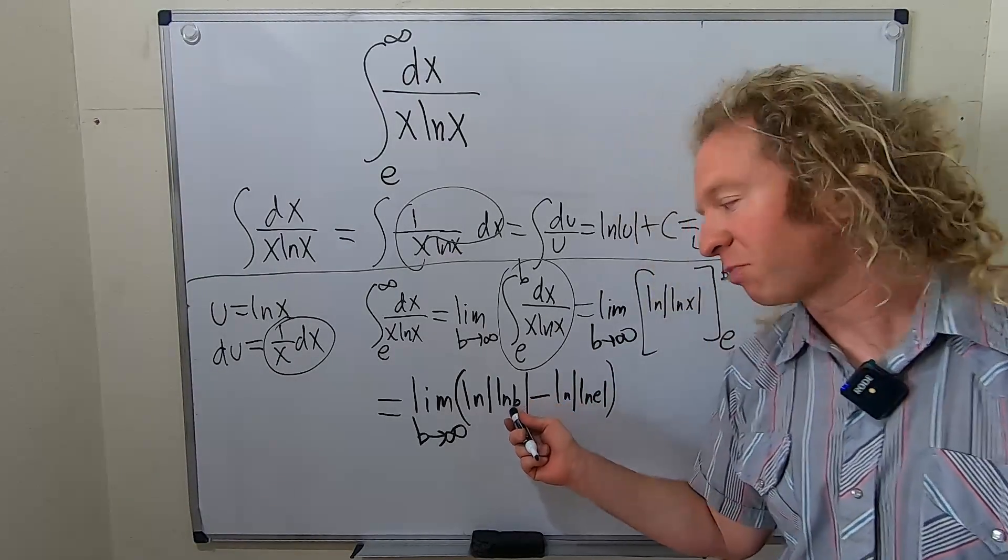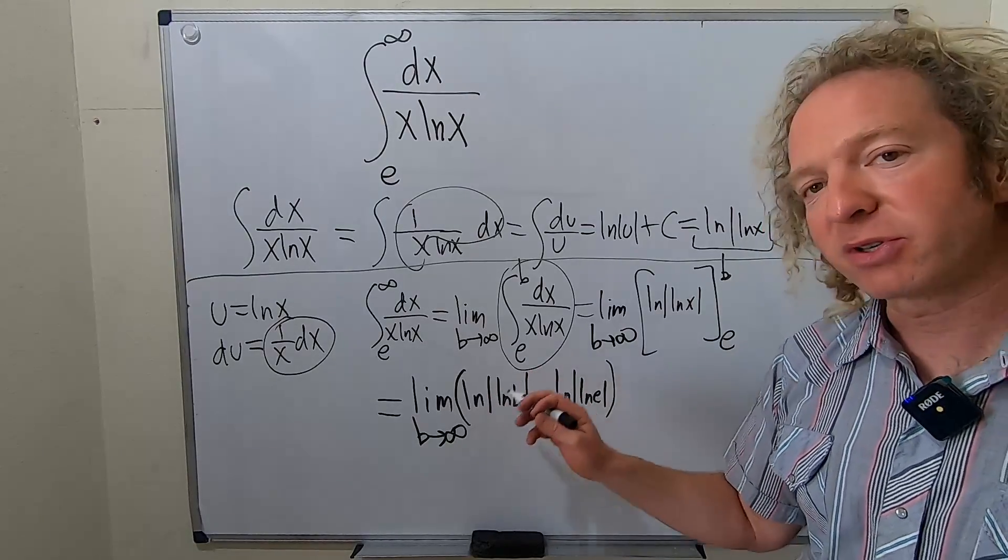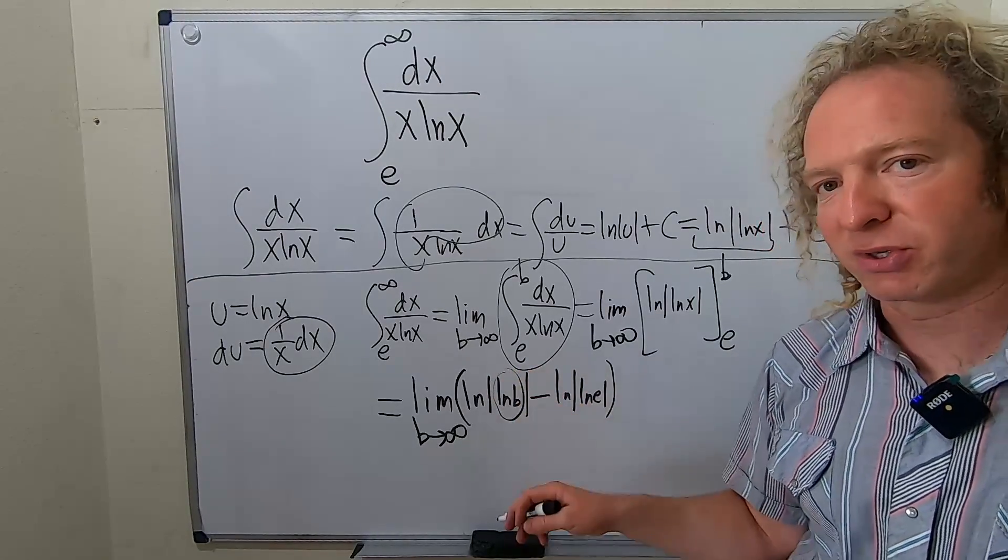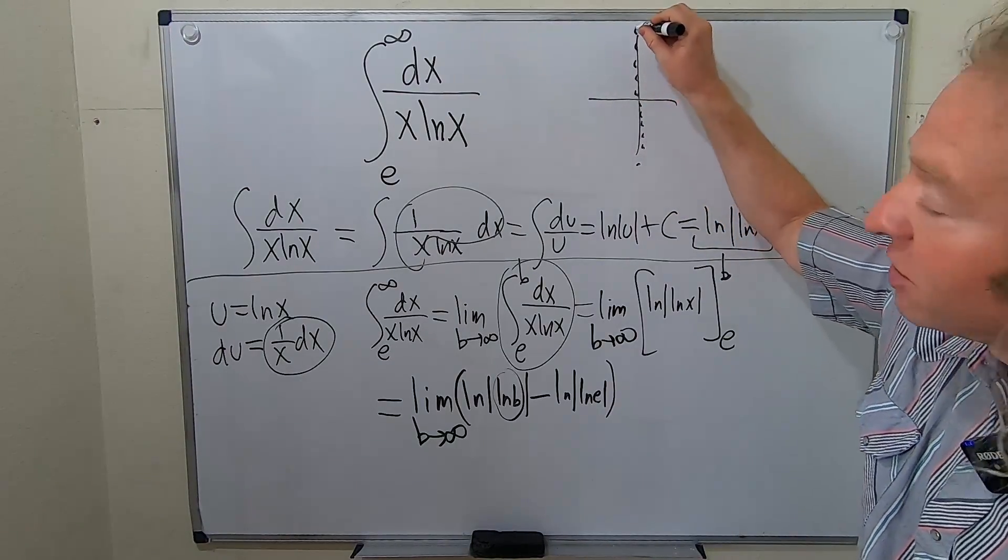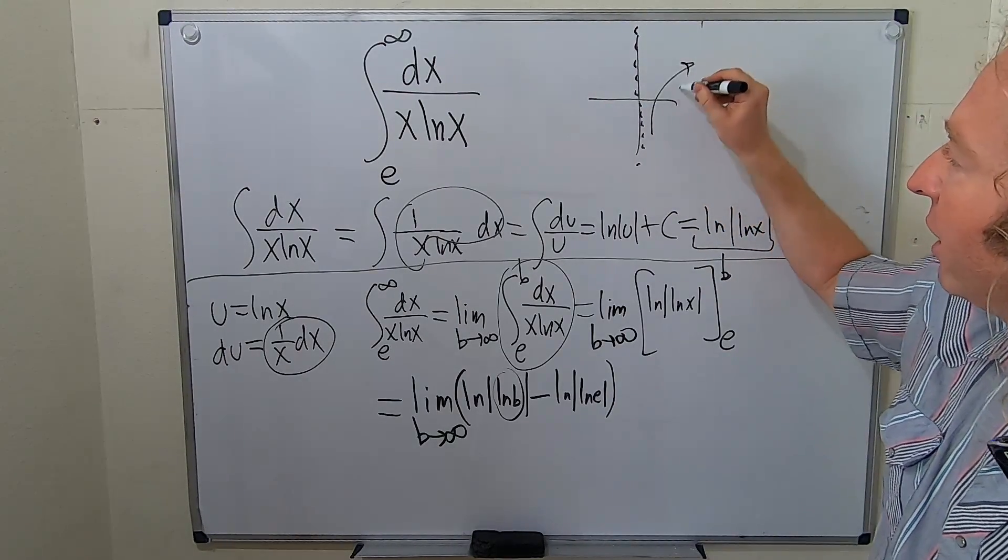But this is bad. b is approaching infinity, and when b approaches infinity, ln b also approaches infinity. If you don't know why, the easiest way, perhaps the best way to know why, is to think about the graph. The graph of ln x looks like this.